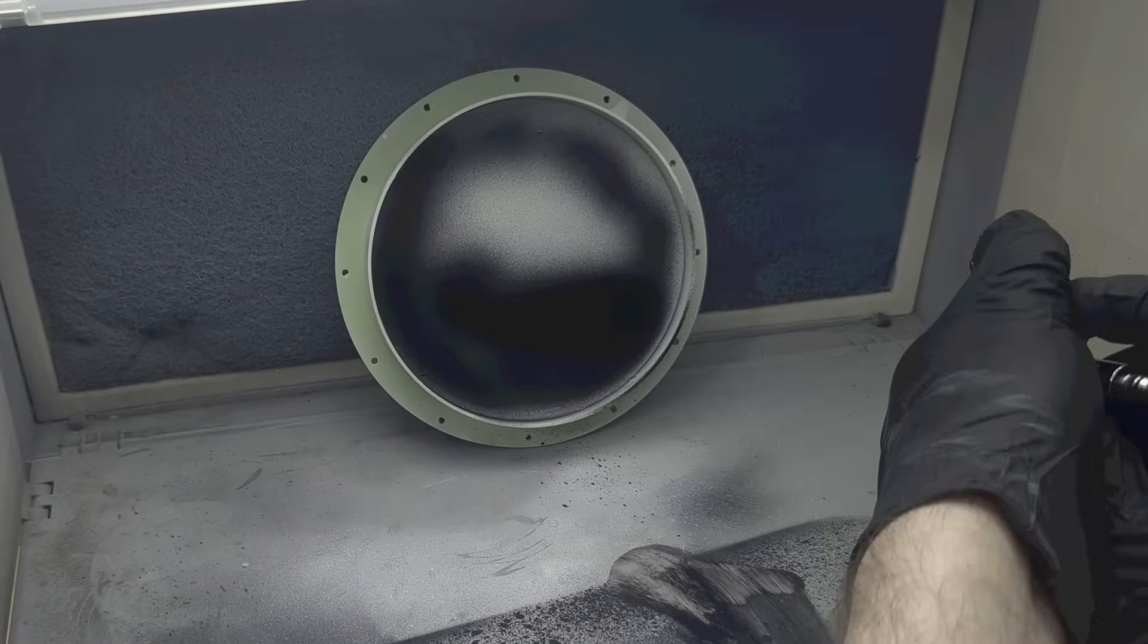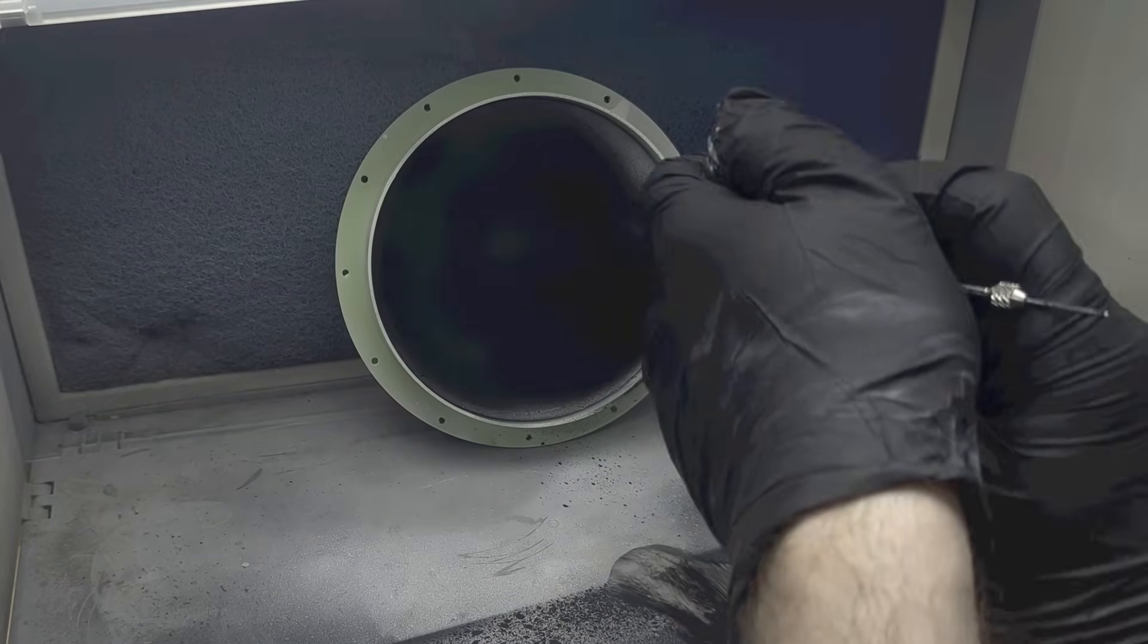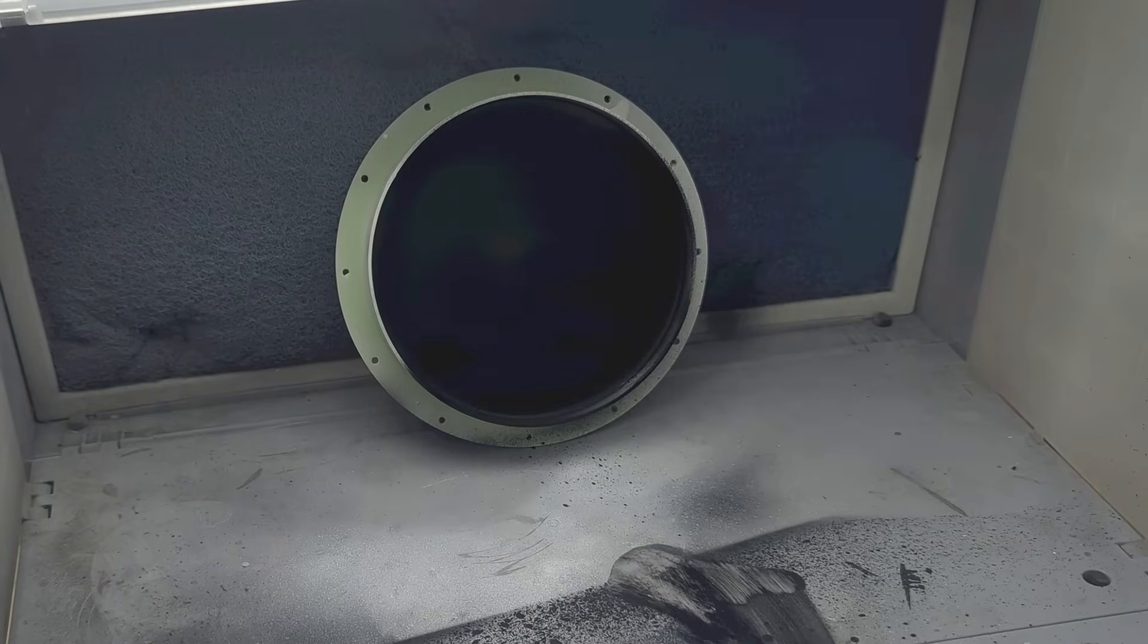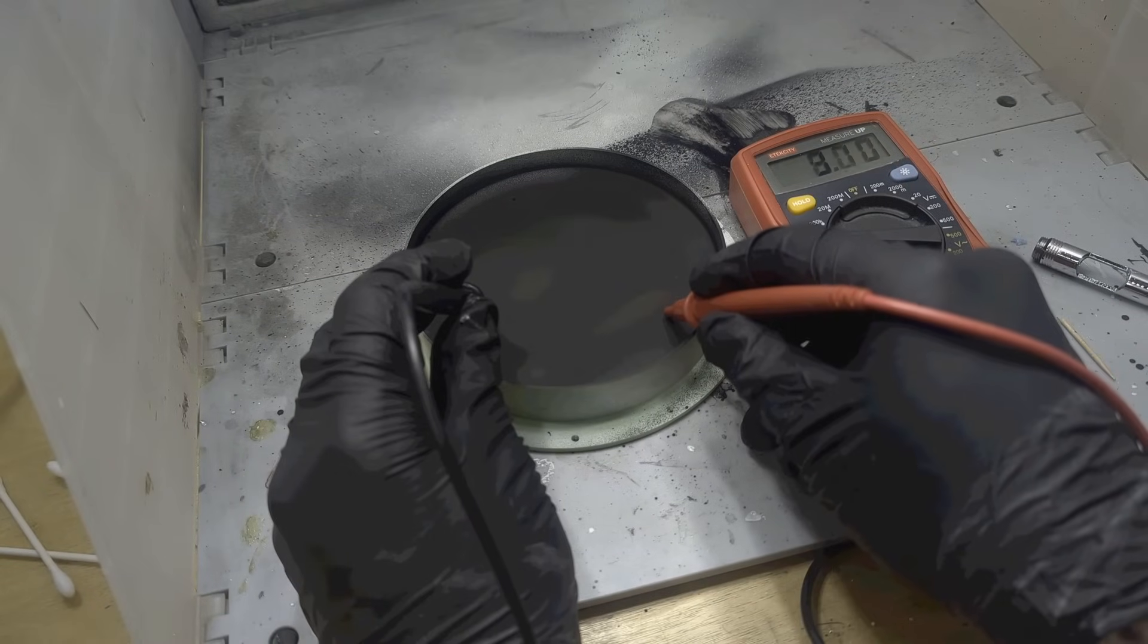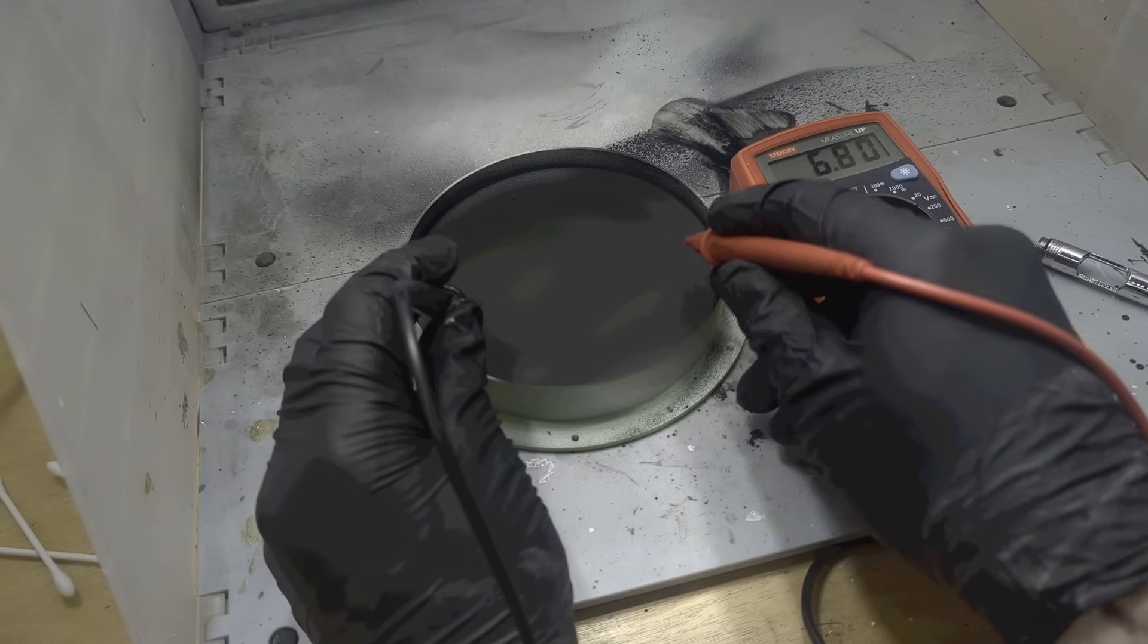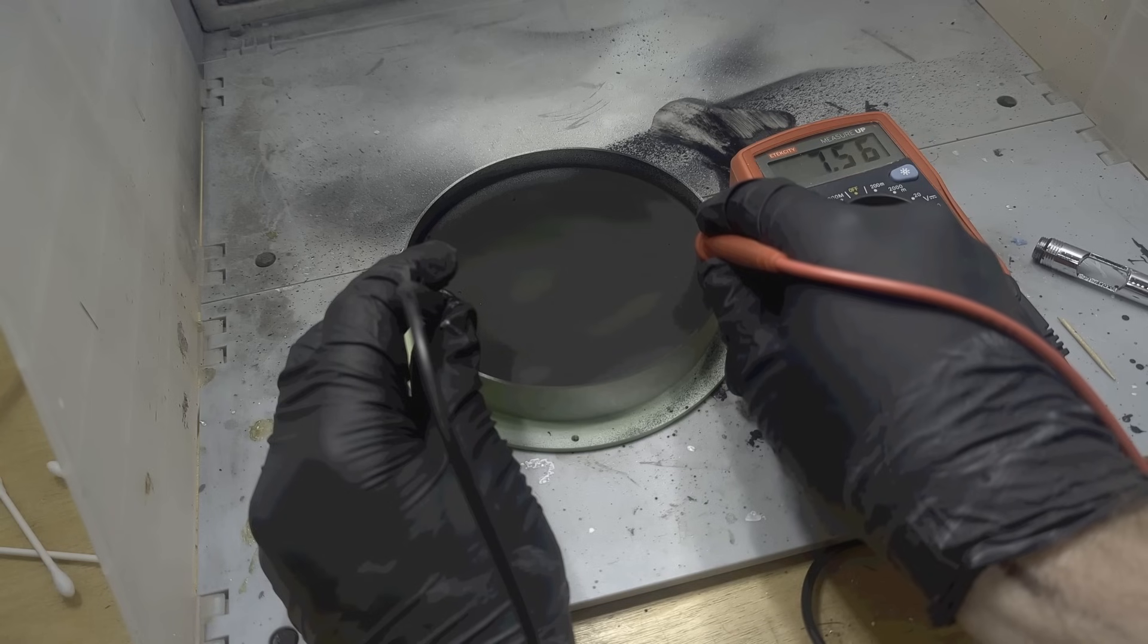Once the primer had fully dried, I used my airbrush to apply the conductive paint. And when that had dried, I checked the resistance across the mirror, and I was seeing about eight kilo ohms, which isn't that conductive, but hopefully it's enough for electroplating.